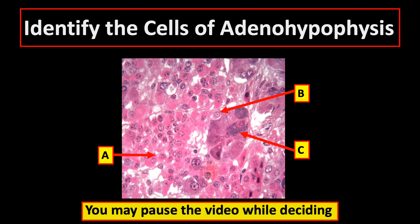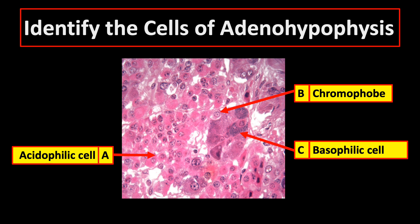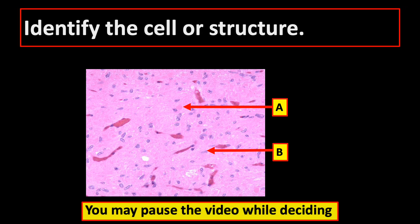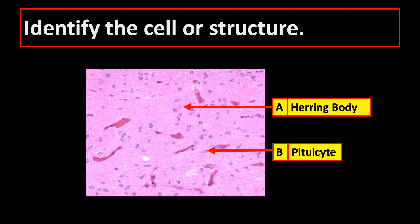Identify the cells of the anterior pituitary gland: A is an acidophilic cell, B is a chromophobe, and C is a basophilic cell. For the next identification: A is a Herring body and B is a pituicyte.